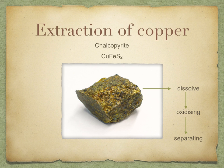Let's have a look at a case study: the extraction of copper. Copper is in the form of chalcopyrite, often a waste material — it's a low-grade ore containing copper and iron. Extraction involves dissolving the mineral, oxidizing it to leave copper 2+ ions, and then finally separating out the metal. Let's look at the process in a little more detail.